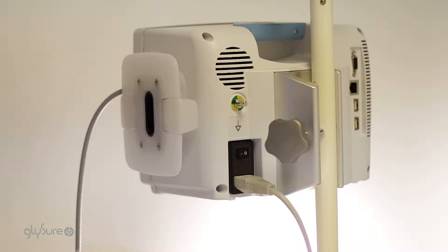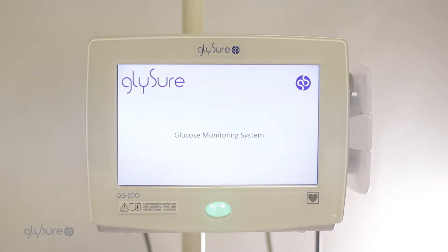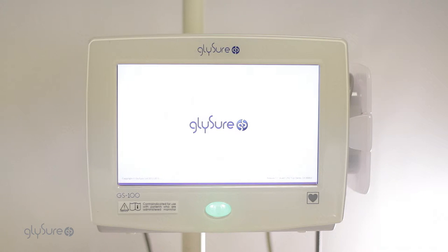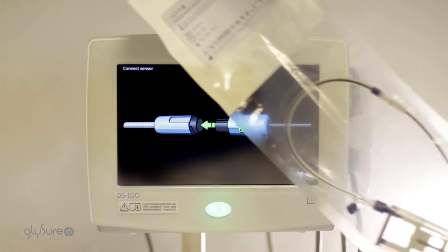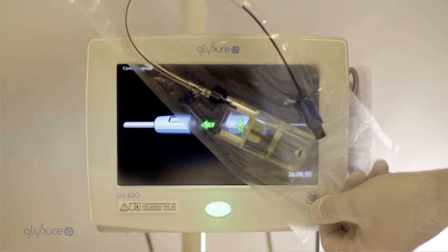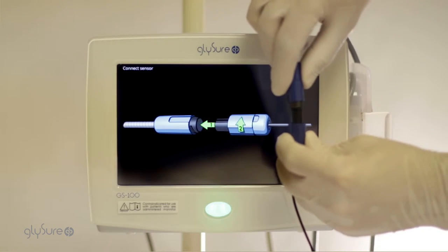Calibration, power the monitor on using the switch on the back. The monitor will boot and display the startup screen. Completion of the system startup prompts the connect sensor screen. Remove the sensor with calibration pod from the sterile pack. Connect the monitor cable to the sensor.